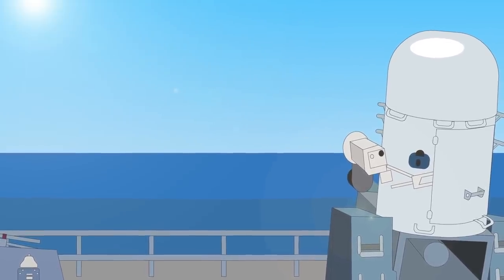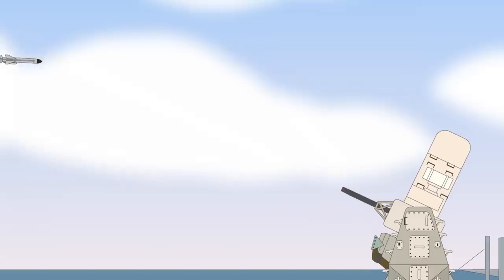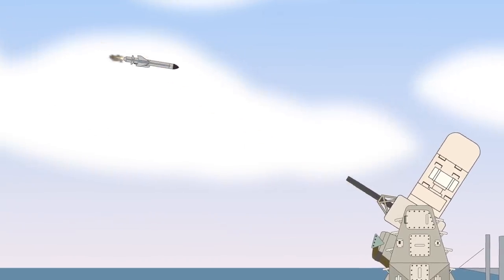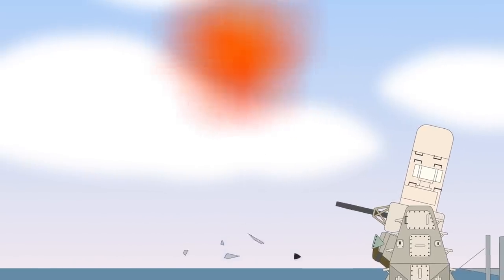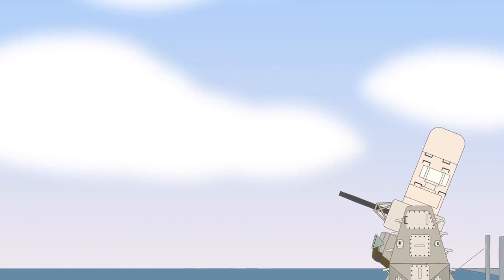Because the Vulcan's rounds on the Phalanx have no explosive heads, they destroy the target by either detonating its warhead, known as a hard kill, or damaging the missile airframing causing aerodynamic disintegration, which is known as a soft kill.